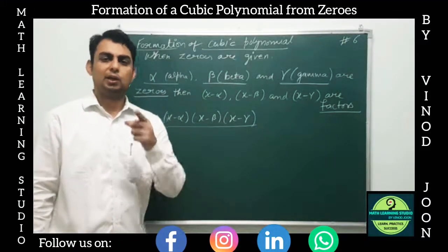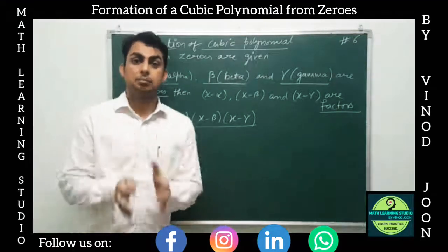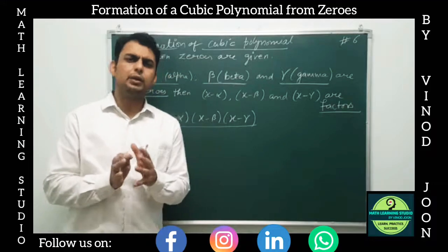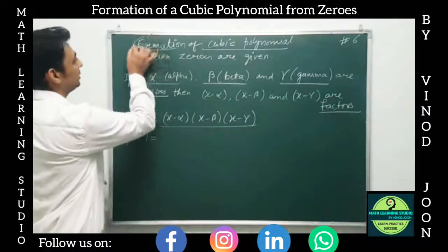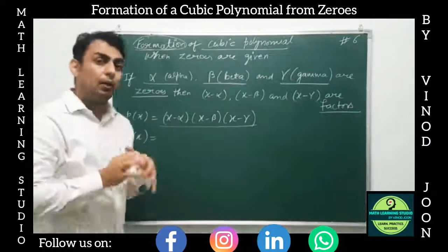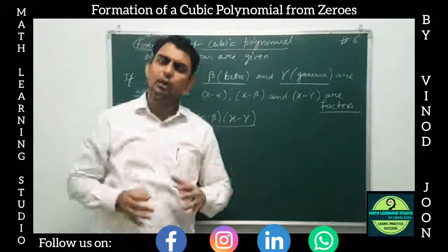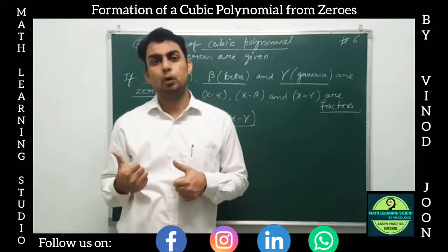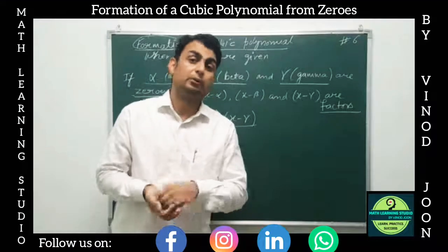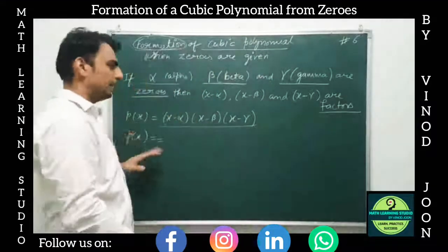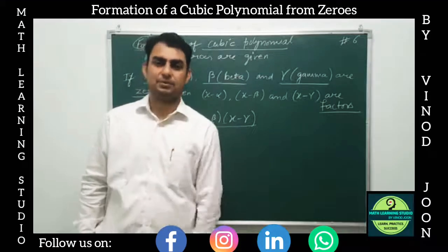Pause this video and multiply these three factors, combine the like terms, and try to see if you get a general rule or formula — just like in the quadratic polynomial we have a direct formula to find the polynomial from the zeros. Pause right now and find out.